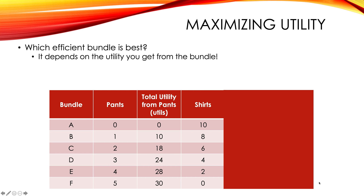If you are consuming bundle A, you're buying zero pairs of pants, which means your total utility from pants is obviously zero because you don't have any pants. At bundle B, you're buying one pair of pants, so your total utility from pants is 10. If you consume bundle C — that's two pairs of pants — your total utility from pants is 18. The marginal utility from that second pair of pants was 8 utils. As you consume more pairs of pants, your total utility from pants rises: it starts at zero with zero pairs of pants, and if you consume five pairs of pants, your total utility is up at 30.